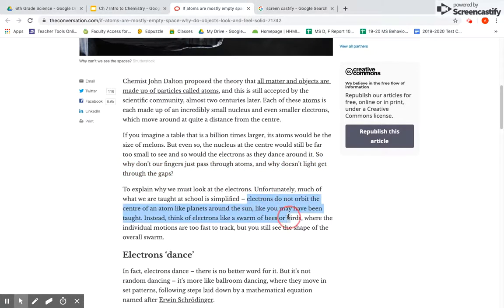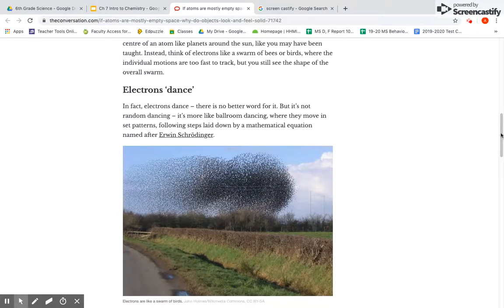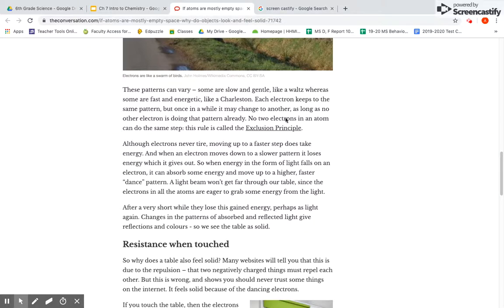So like I said before, electrons do not orbit the center of the atom like planets around the sun. Instead think of like a swarm of bees or birds, where it's just the motions too fast to track, but you can still see the overall shape and swarm. So electrons kind of dance basically around the nucleus. So they keep the movement of the electrons. So we know they're always moving, always having some form of orbit movement there. They contain energy of some form basically. And so an energy in the form of light or touch or anything touches these electrons, touches them. It actually absorbs that, reflects it back.